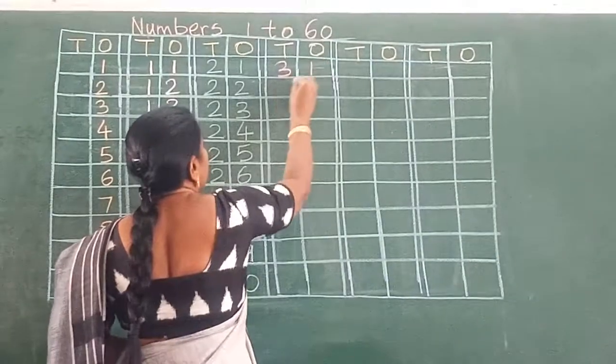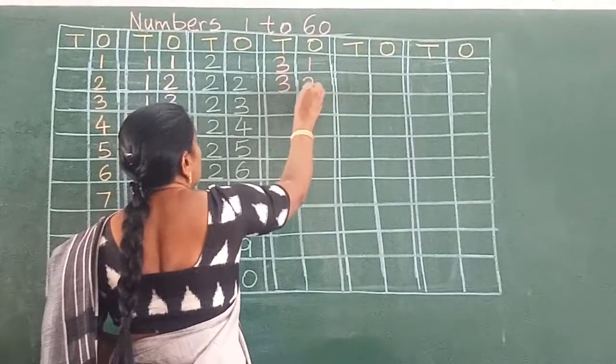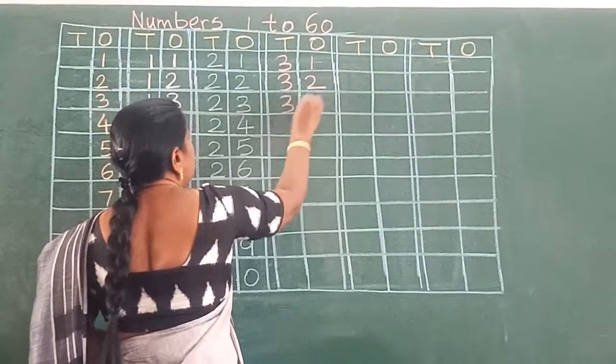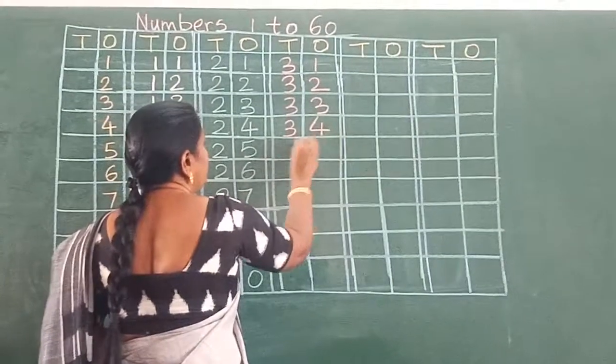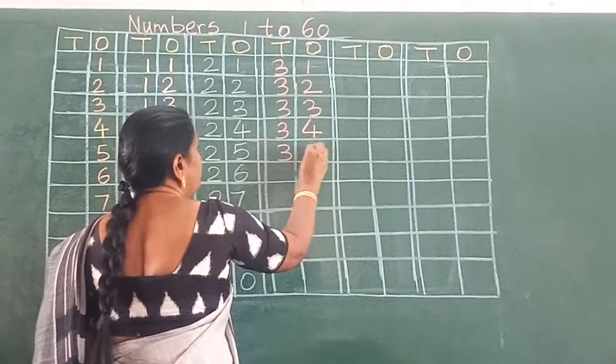3, 1, 31. 3, 2, 32. 3, 3, 33. 3, 4, 34. 3, 5, 35.